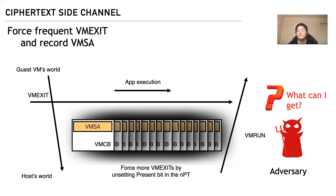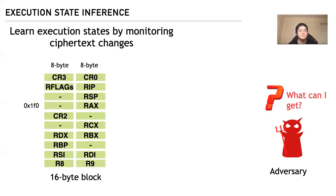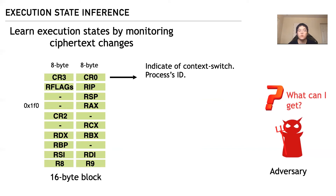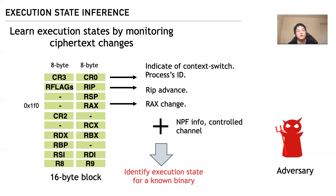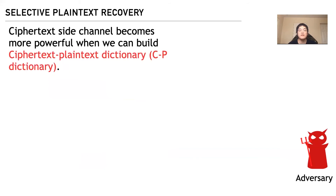What can the adversary get from those ciphertexts? First, they can infer the VM's execution state. By continuously monitoring ciphertext changes, the adversary can infer different VM activities — for example, when the block containing CR3 and CR0 changes, they can detect a context switch. They can also learn when RIP changes. By combining this with controlled channel and nested page fault information, the adversary can identify execution states for a known binary. The adversary can also use the ciphertext side channel to recover some registers' plaintext, building a ciphertext-to-plaintext dictionary.